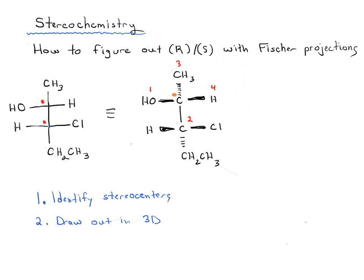So, one, two, three, and four. We trace the line from one to two to three. As we do so, we note that it is counterclockwise. However, notice that number four is in the front. In other words, it's a wedge. It's coming out of the page at us. In order to determine R and S, we need our number four to actually be in the back. That's how we accurately determine R and S.